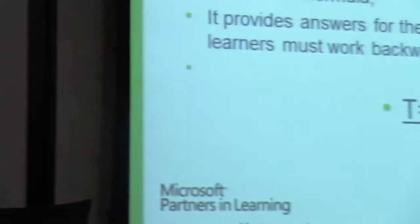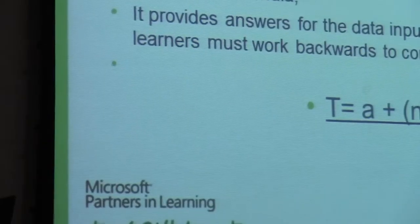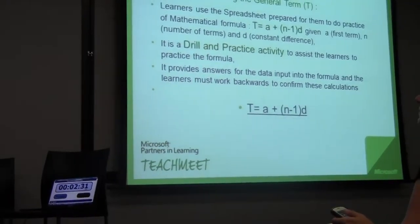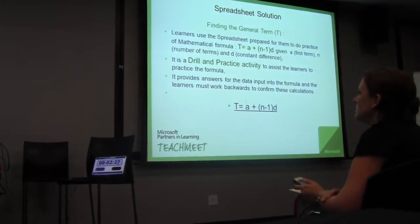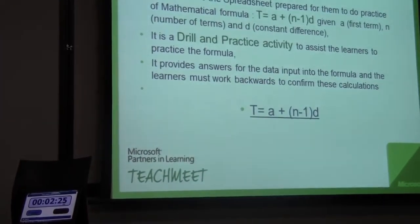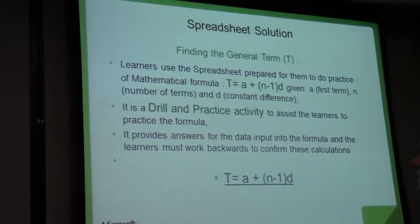This is Spreadsheet Solution for math teachers. You identify with this formula here. Learners use the spreadsheet prepared for them to do practice on mathematical formula T equals a plus (n-1)d, which is a general formula if you are given numbers or terms in a sequence, given the first term a, number of terms n, as well as d, the constant difference.